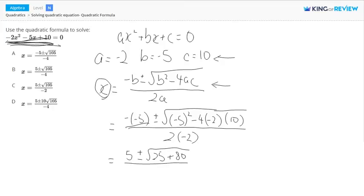over 2 times negative 2, which is negative 4. So this just equals 5 plus or minus square root of 105 divided by 4.